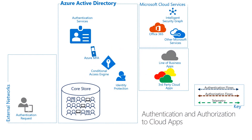The first step occurs when the user is attempting to access an application. For example, a user, Ross, is attempting to access his email using Outlook Mobile from his Android device and does not have a current active token. In this example, let's assume Ross passed the authentication phase and is now completing the authorization phase.